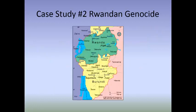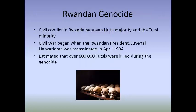Our second case study is the Rwandan Genocide. It emerged from a civil conflict in Rwanda between the Hutu majority and the Tutsi minority - two ethnic groups with a complicated history going back to the colonial era when Rwanda was a colony of Germany. During this time, the Tutsi minority came out with far more power than the Hutu majority, causing enormous tension between the two groups. A civil war broke out when the Rwandan president was assassinated in April 1994, resulting in a genocide in which over 800,000 Tutsis were killed - a grave violation of human rights on the scale of the Holocaust.